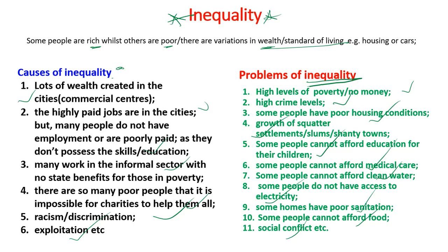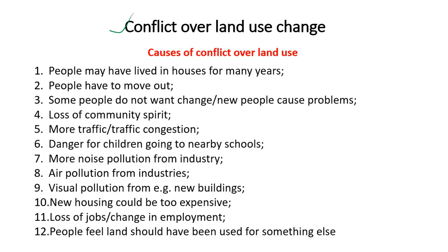The next urban problem is conflict over land use change. Causes include: people may have lived in an area for many years and are forced to move out, which causes conflict. Some people do not want change - they prefer their area as it is. Changing land use can lead to loss of community spirit, and people want their traditions and ancestral connections to be preserved.